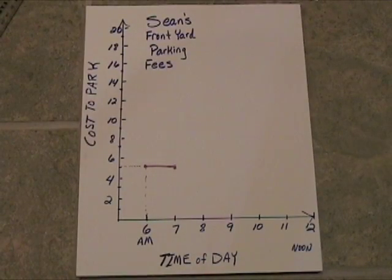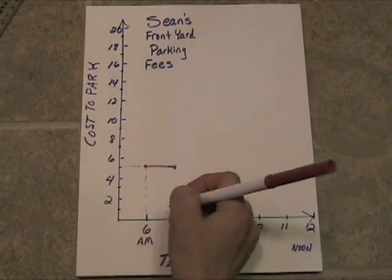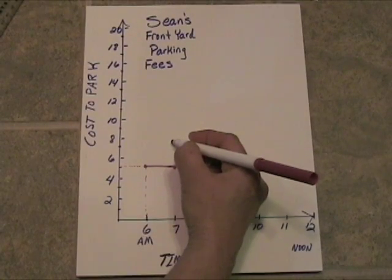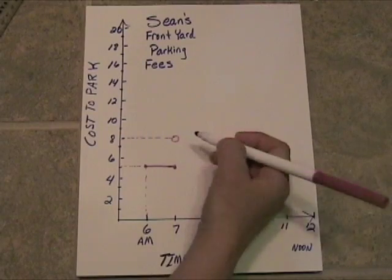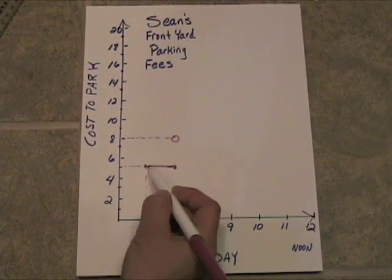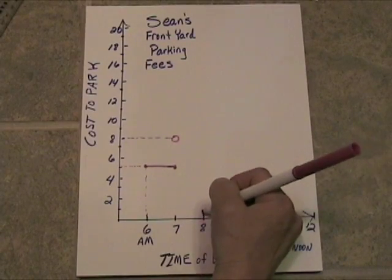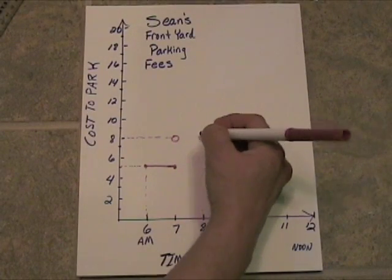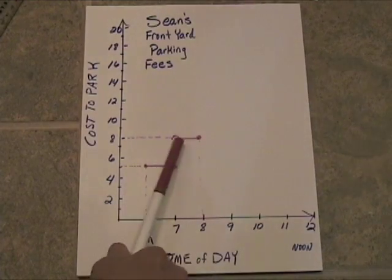Now, at just an instant after 7, the price is going to go up to $8. How do we draw the instant after 7? We go directly above 7 o'clock and come across from $8, and we put an open circle on the 7. So right at 7, you're being charged the $5 rate. Up at $8, we have an open circle, and we're going to be charged $8 the whole way over to 8 o'clock. So for this step, from the instant after 7 all the way to 8, we will be charged $8.